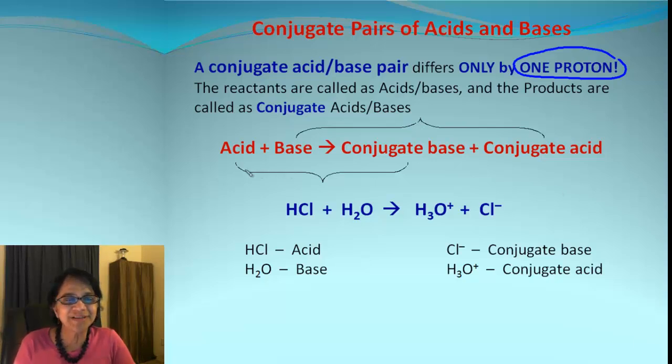So if you remember that when acid loses a proton, what it forms is a conjugate base and base, when it gains a proton, what it forms is a conjugate acid.